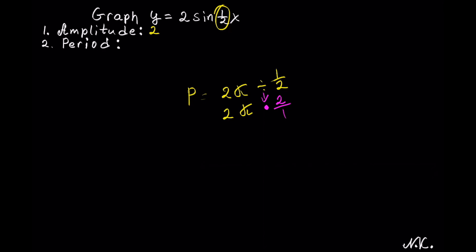This gives us 2 pi times 2. We have 4 pi, which is our period.